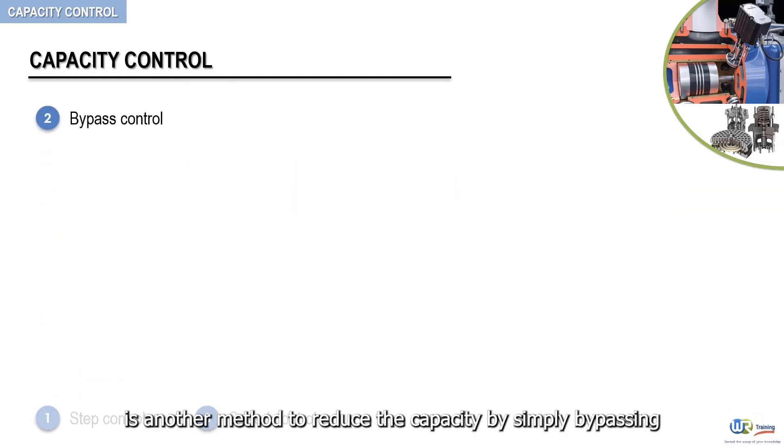Bypass control is another method to reduce the capacity by simply bypassing some discharged gas back to the suction of the compressor. Though the method is relatively simple, it calls for wastage of horsepower.